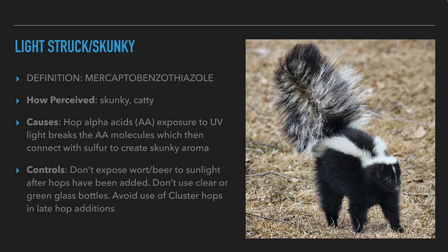The next aroma, which also comes from hops, is skunky aroma. This aroma is defined as mercaptobenzothiazol. This compound smells like a skunk or cat urine. This compound appears in beer as a result of exposure to UV light. The UV rays break the molecules of alpha acids. Then the fragments react with sulfur that is found in the beer and form mercaptobenzothiazol. To avoid the formation of this compound, the brewers should avoid exposure of the beer to light after they added hops, avoid transparent or green bottles to package the beer, and avoid using cluster hops in the beer.